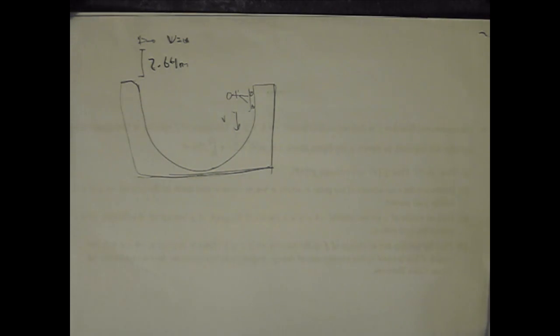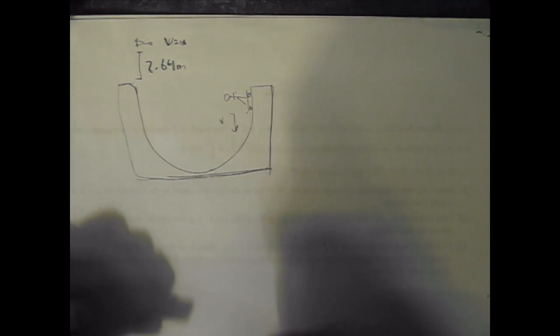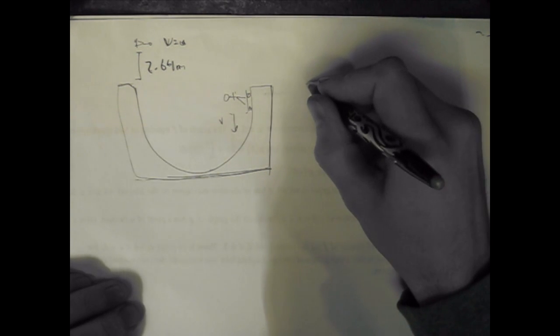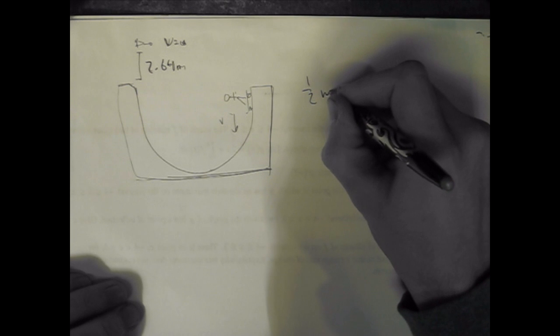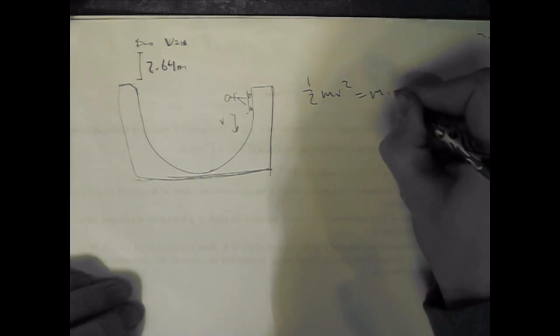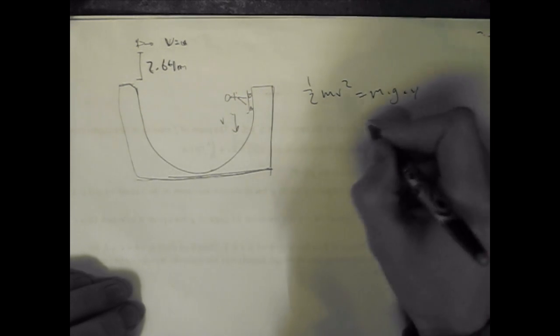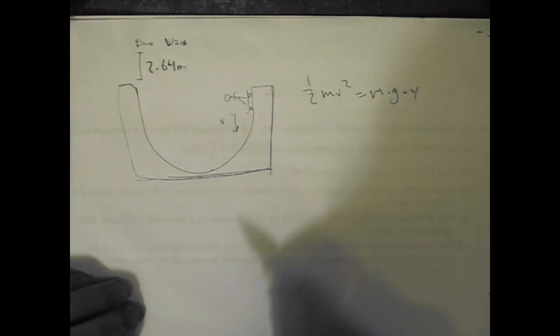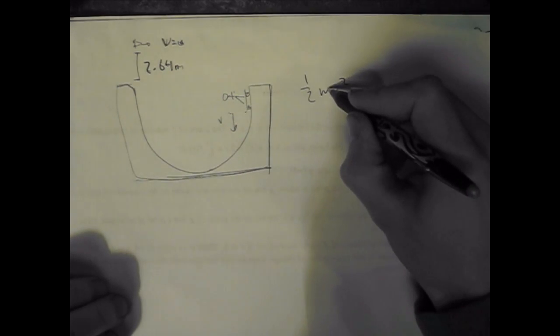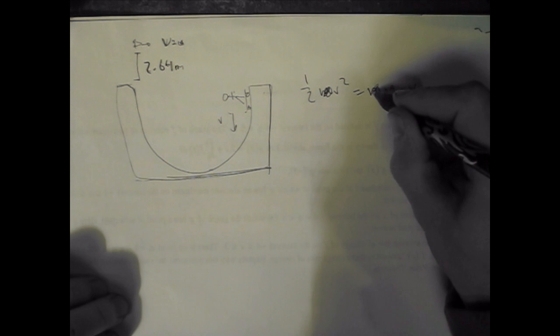What was the skateboarder's initial speed at point A? Well, again, it's going to be one-half mv squared equals mgy, which is just kinetic energy equals potential energy. And once again, I'm not giving him mass, so we can just cancel out these masses.